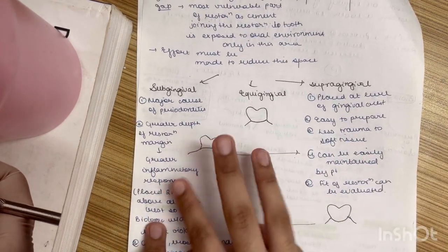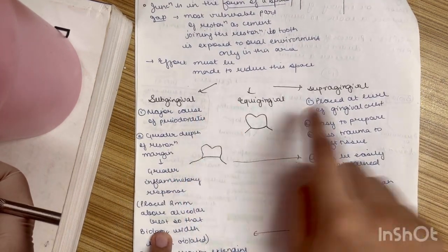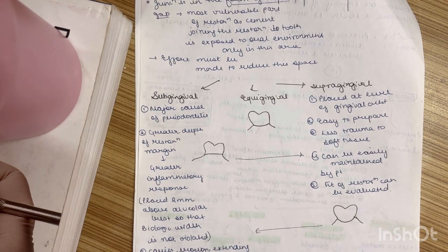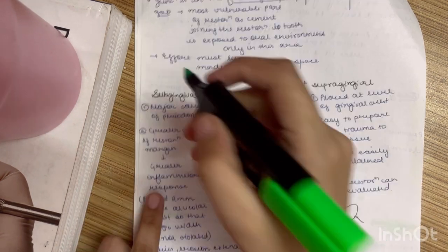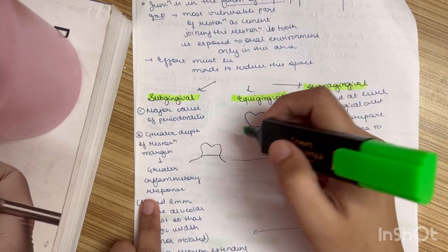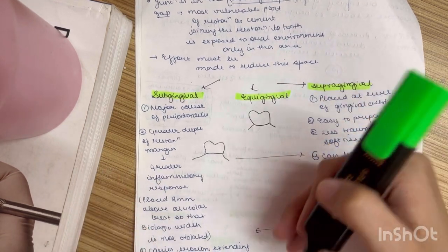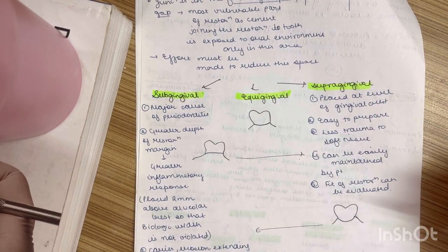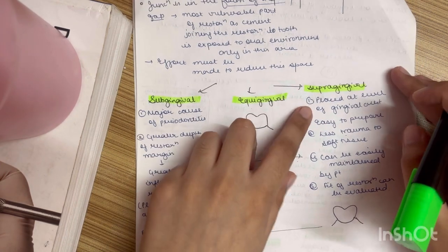Now this is the interesting part we have three types of margins: subgingival, equigingival and supragingival. Now what we see is as the name suggests equigingival will be equal to the gingival level. Subgingival will be lower and supra will be above.